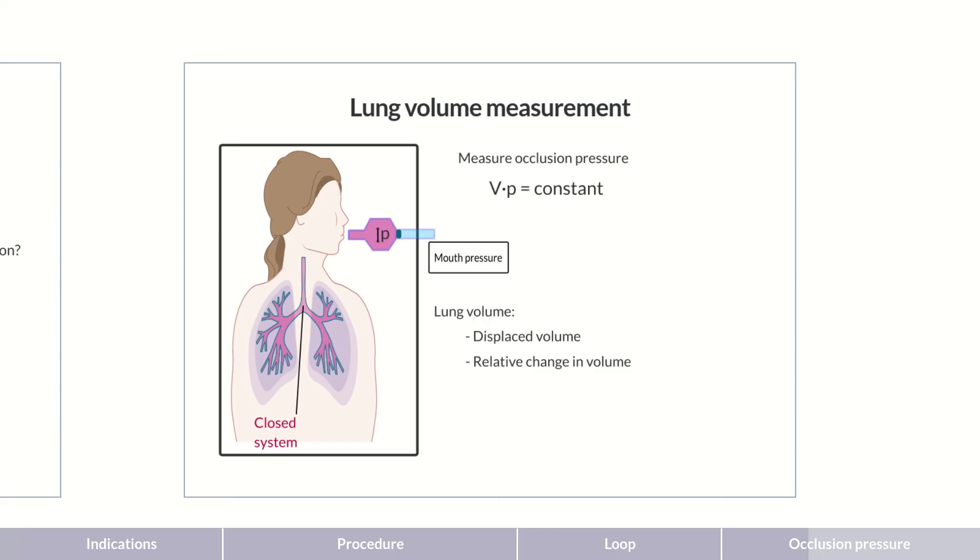For the product of the two variables to remain constant, lung movement and alveolar pressure need to change conversely. For example, if the pressure in the lungs decreases by 1% through inspiration, lung volume increases by 1%. Occlusion pressure can, therefore, be measured to determine the relative change in volume in the lungs during breathing.